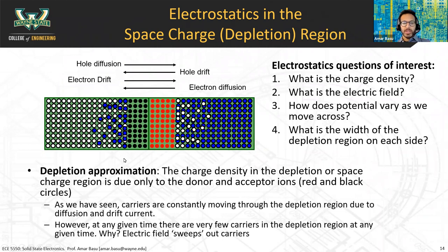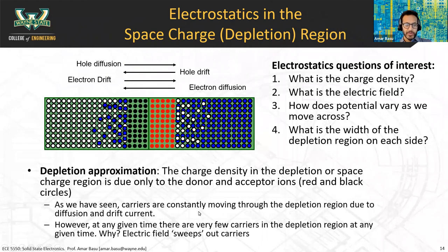Our four questions are: What is the charge density on the P and N sides? What is the electric field? Where does the electric field hit a maximum? And how does the electrostatic potential vary as we move across from left to right? And what is the width of the depletion region?